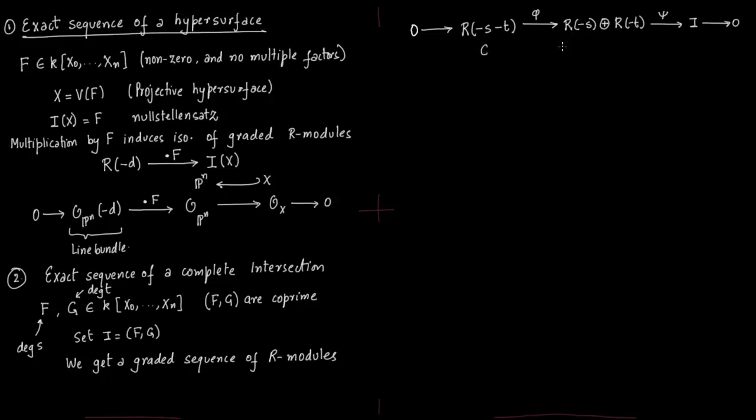Start with c. This is how we define phi: you get (-cg, cf). Notice that degree of g is t, so -cg means degree of c is -s-t plus t, you get -s. Degree of f is s, then s added to -s-t you get -t. Now psi: you take map a and b, take af + bg. Degree of f is s and a lies in -s so you get -s plus s equals zero. Similarly, b is minus t, you add t and g is degree t so you get zero there also.